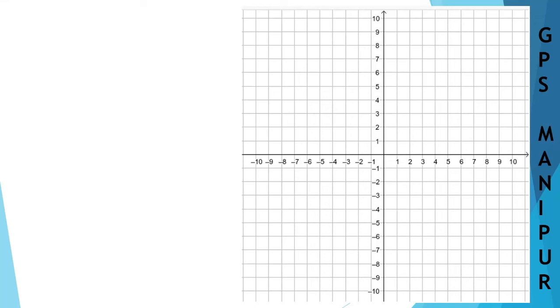Now we are doing exercise 4.1, question number 3, Roman number 3. We have 2x plus 3y is equal to 5.